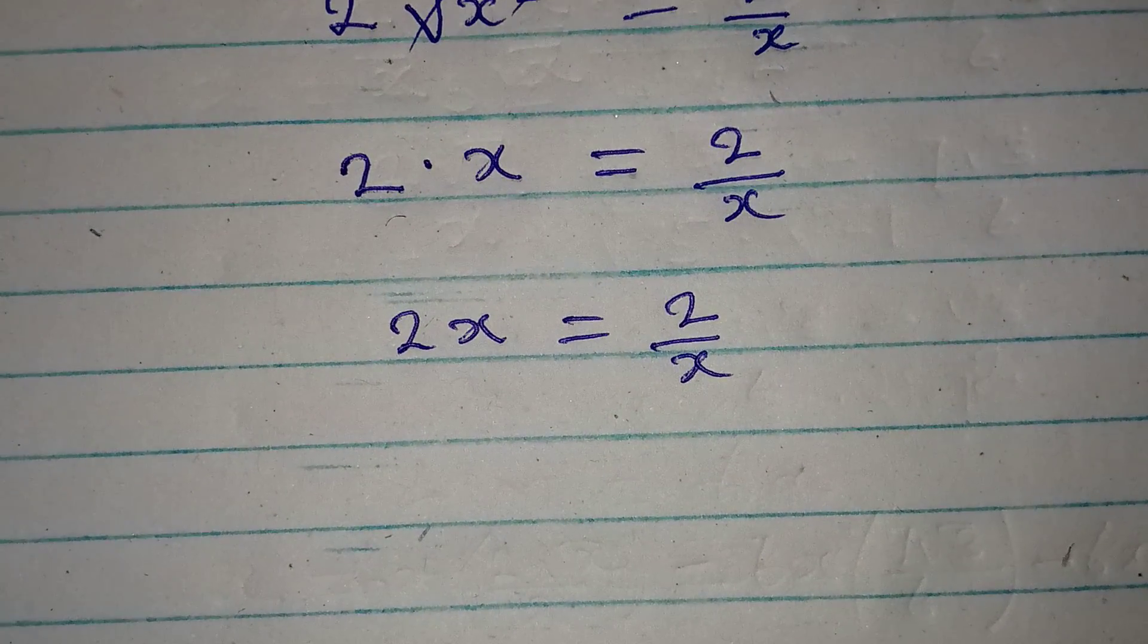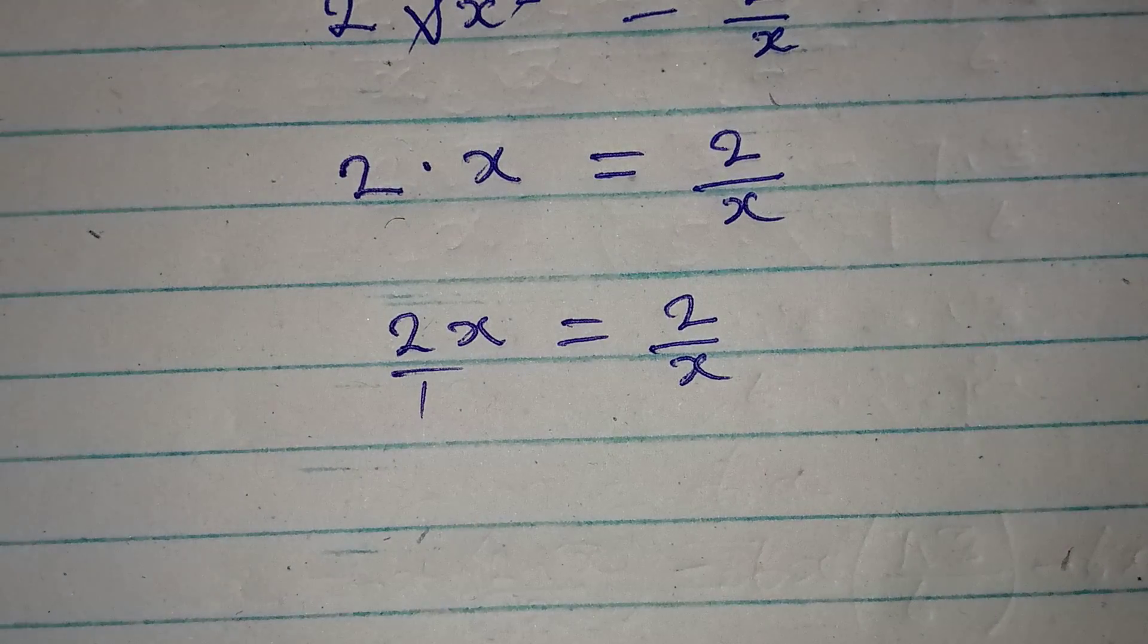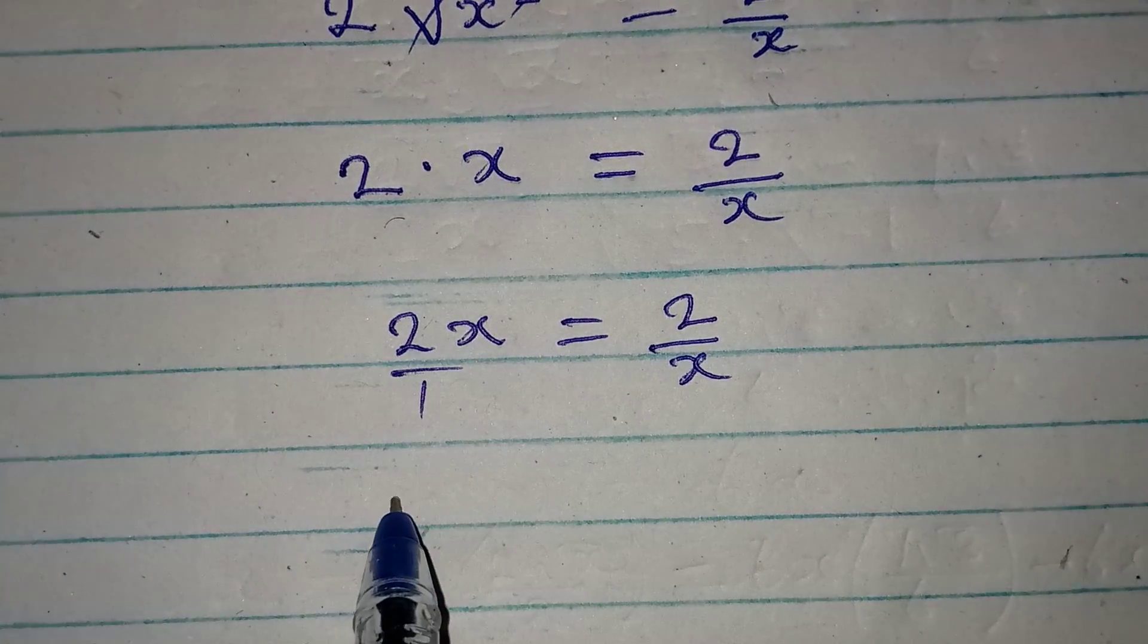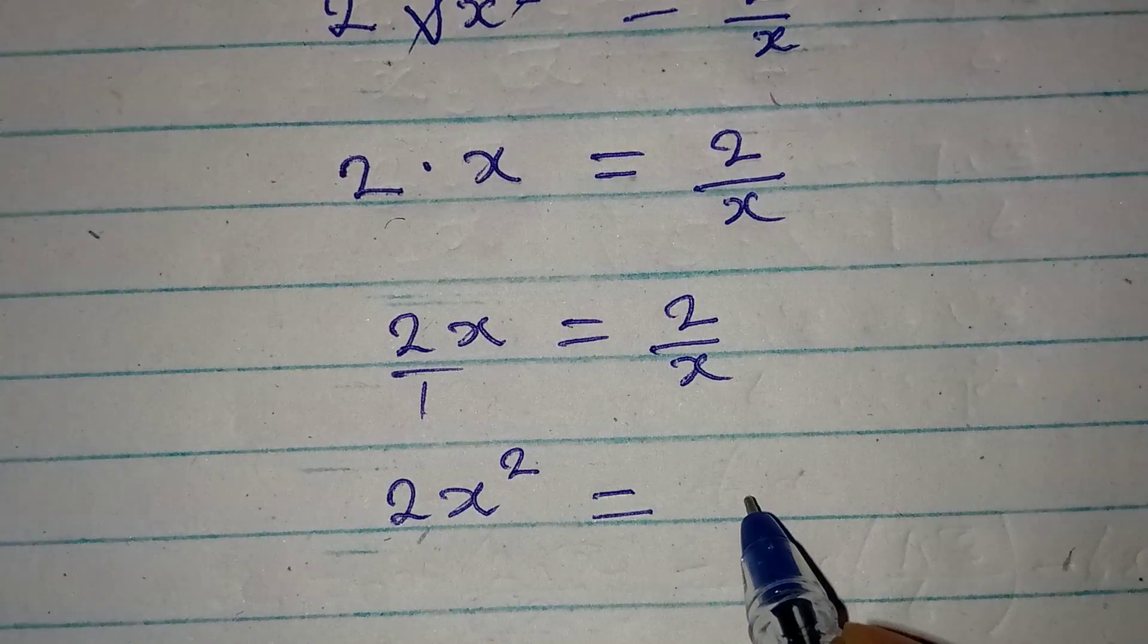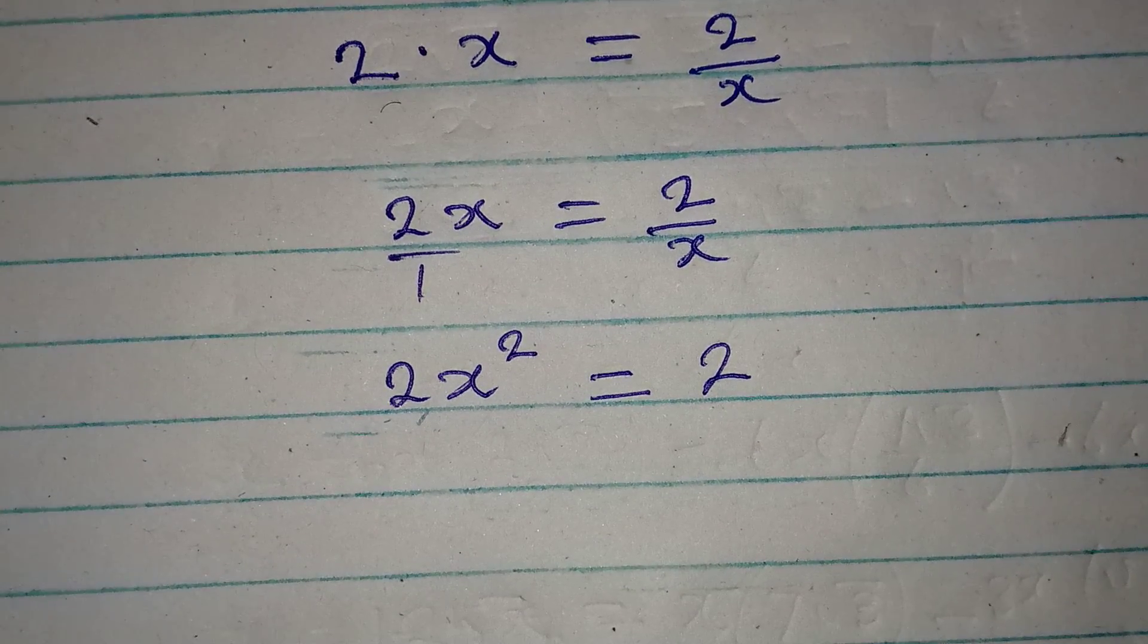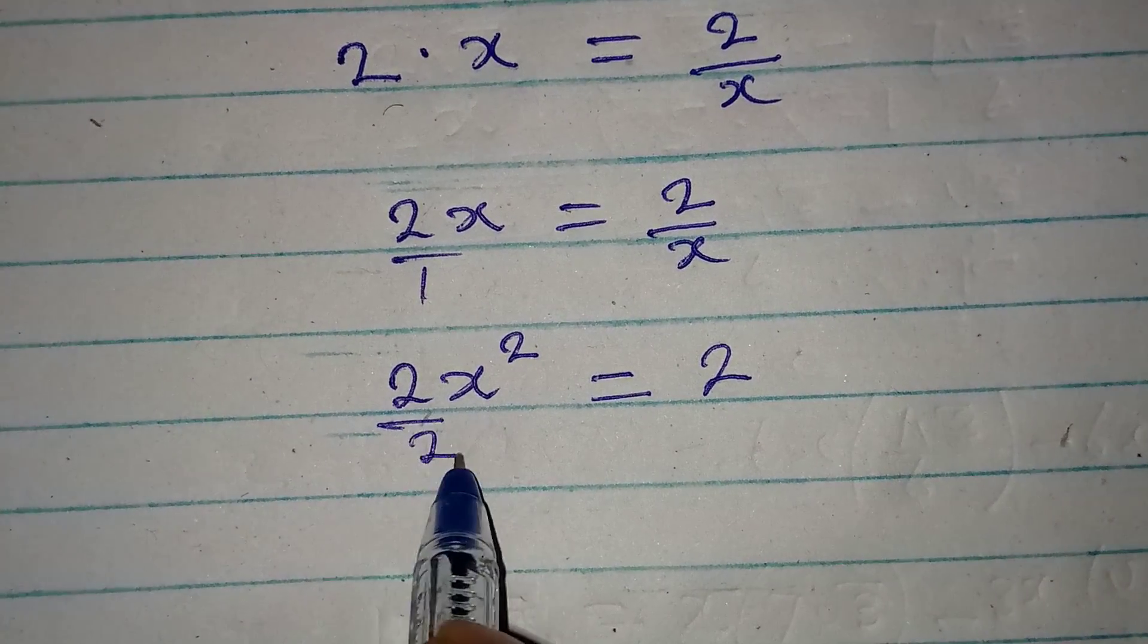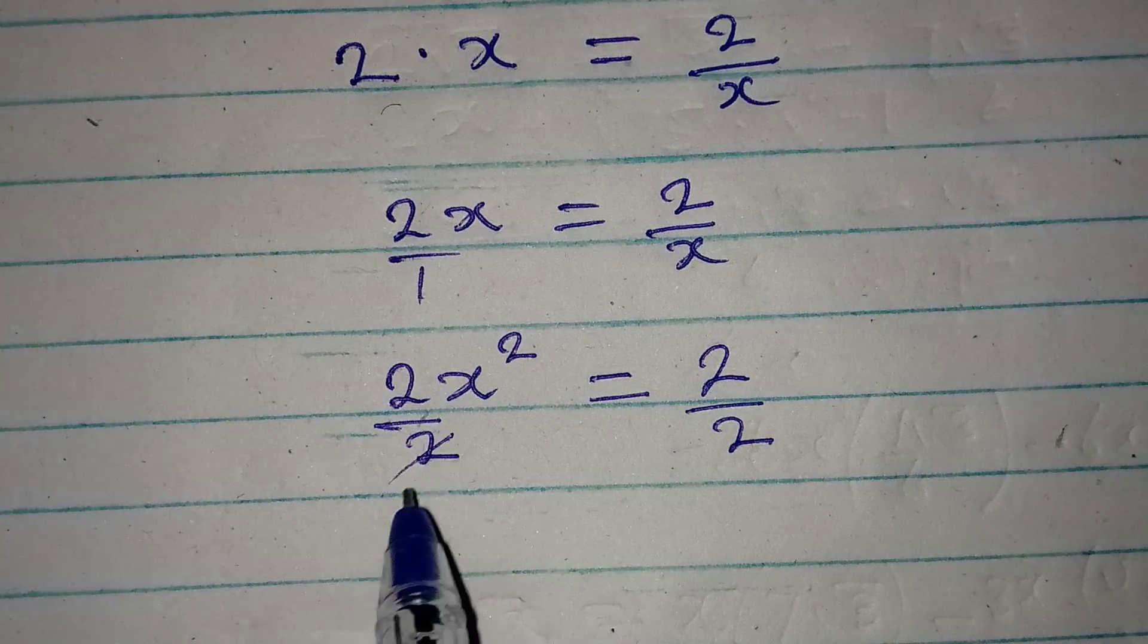Do not forget that from here we can cross multiply because this is still over 1. 2x times x will give us 2x² which is equal to 1 times 2, which gives 2. Then do you know that we can divide by 2 because the coefficient of x² is 2?